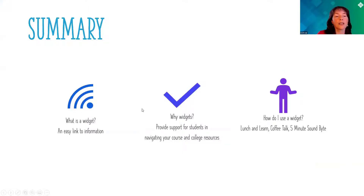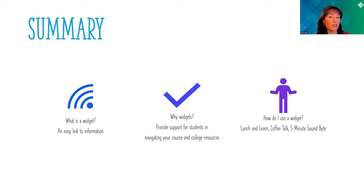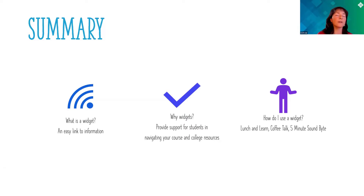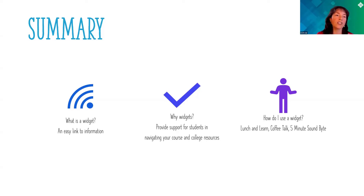What we've talked about today is how to look at widgets and think about how we can use them. What is a widget? It's an easy link to information. Why should we use widgets? To provide support for students — we want them to be able to navigate your course and get to the experts who can help answer their questions. How do I use a widget? This video will be available in a couple of days. There's also another video from a couple of semesters ago, a Coffee Talk on homepages and widgets, and a five-minute soundbite. Lunch and Learn is typically 30 to 45 minutes, Coffee Talk is 15 to 20 minutes, and the five-minute soundbite is quick and direct.